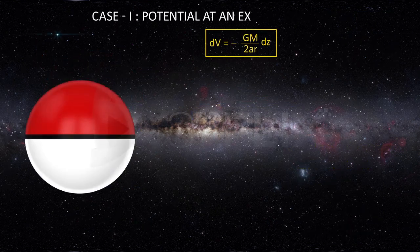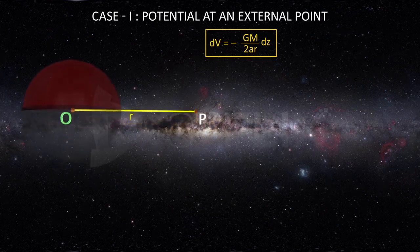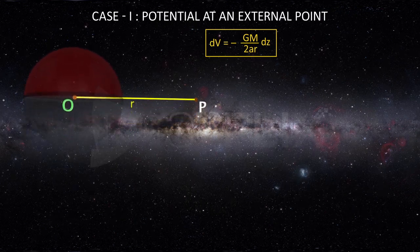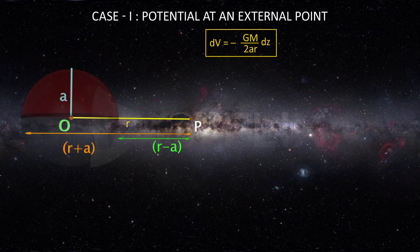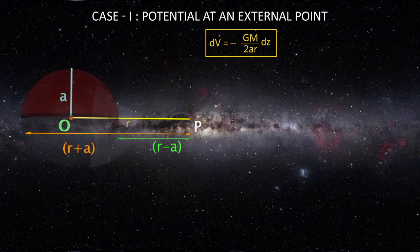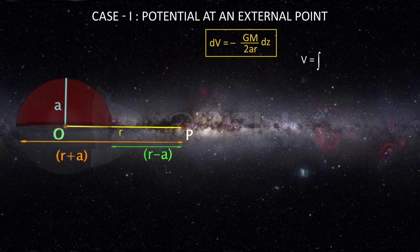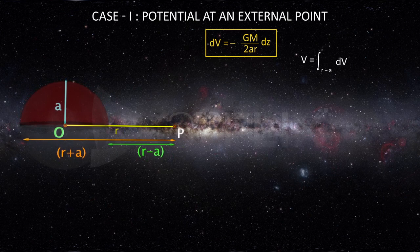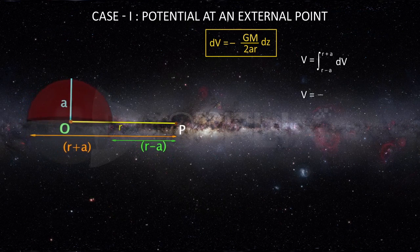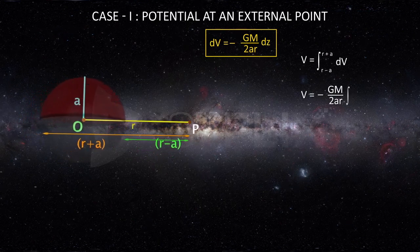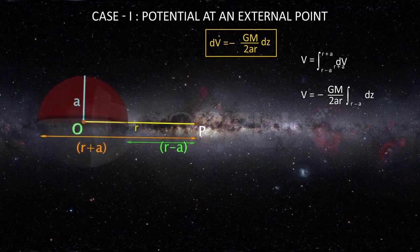Case 1: Potential at an external point. If point P lies outside the sphere, z varies from r minus a to r plus a. Hence, the net gravitational potential at P is given by integrating dV within the limits r minus a to r plus a. V equals minus Gm by 2ar times the integral of dz within those limits.